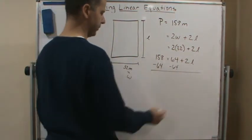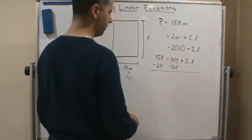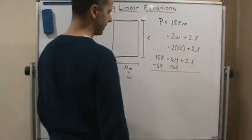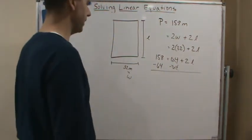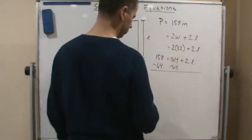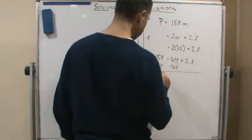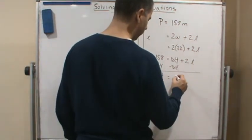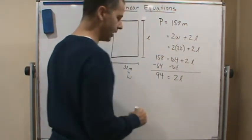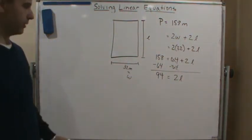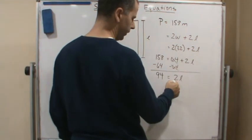Okay, so obviously this becomes zero. 158 minus 64 is 94, yes, 94. And 94 equals 2 times L.